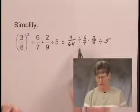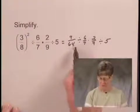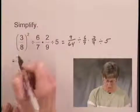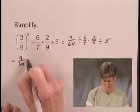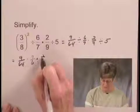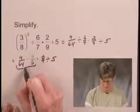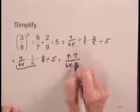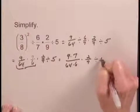Now we'll just do the multiplications and divisions in order from left to right. The first thing I will do is divide 9 over 64 by 6 sevenths. That's equal to 9 over 64 times the reciprocal of 6 sevenths, which is 7 sixths. And then I have times 2 over 9 divided by 5. When I perform this multiplication, I get 9 times 7 over 64 times 6, and this is still times 2 ninths and divided by 5.